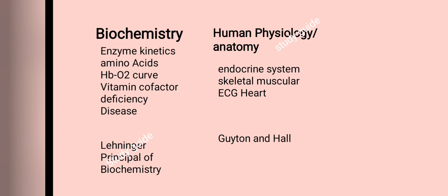In human physiology and anatomy, the most important part is the endocrine system, then the skeletal and muscular system, ECG of the heart, and the brain. These topics can be read from Guyton and Hall.